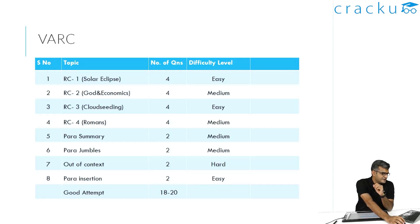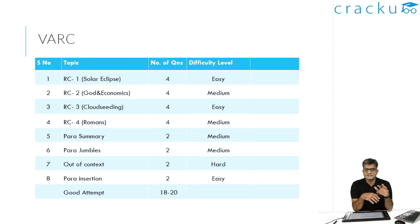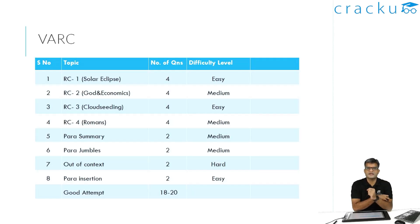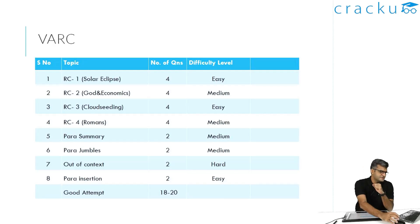The third RC was about cloud seeding and rains in the Middle East — a very straightforward passage. Unfortunately, when I looked at it, I thought this was a science and technology passage, so I didn't attempt it at the start because I thought I might get stuck somewhere. But this was a fairly simple, straightforward passage. Even the questions were not very difficult. This is probably the easiest of the four RCs and something you should definitely attempt — no complication, easy to read, straightforward questions.